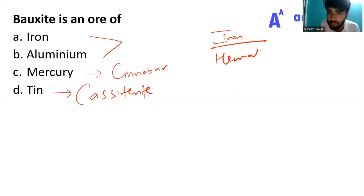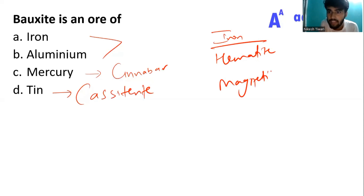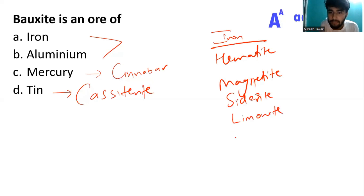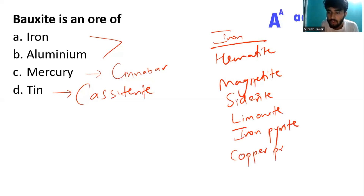The ores of iron are: hematite, magnetite, siderite, limonite, iron pyrite, and copper pyrite. So these are the ores of iron.